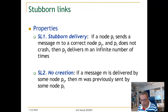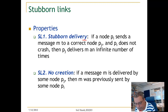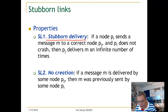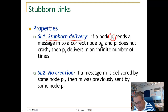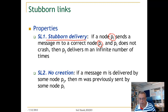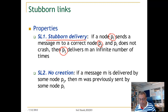So what are the properties of stubborn links? The important property is the so-called stubborn delivery, and that means if a node PI sends a message M to a correct process PJ, and PI does not crash,